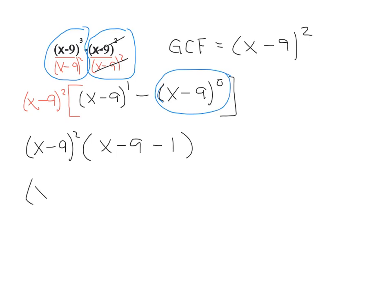Now just combining some like terms inside that parentheses, the first one gets copied, x minus 9 squared, but in here we have a minus 9 and a minus 1, so they'll combine for a minus 10.